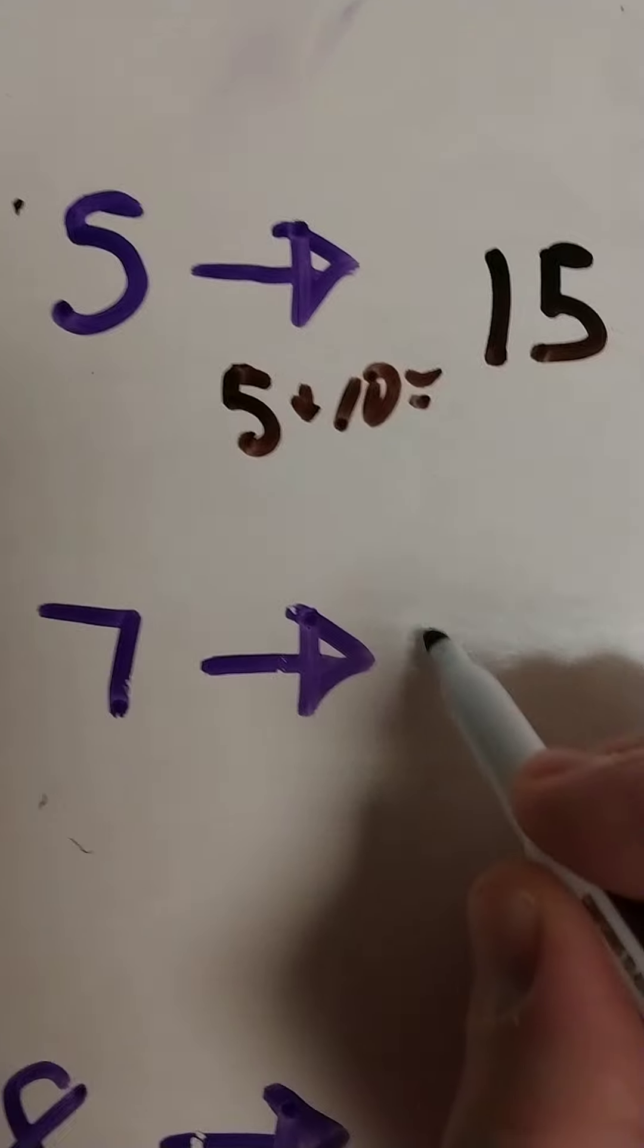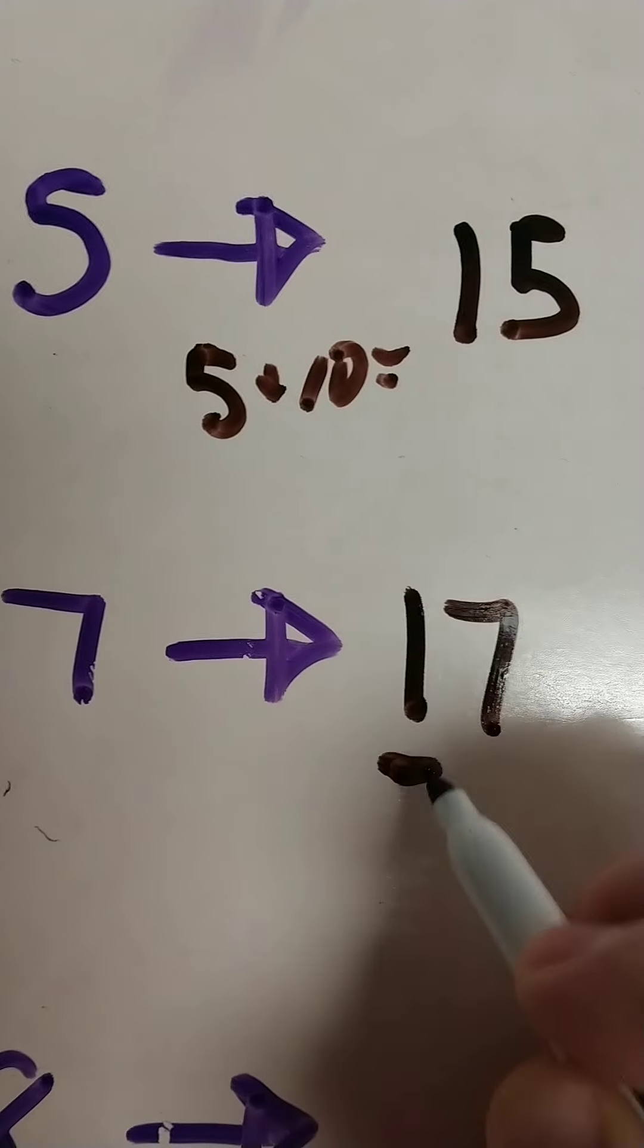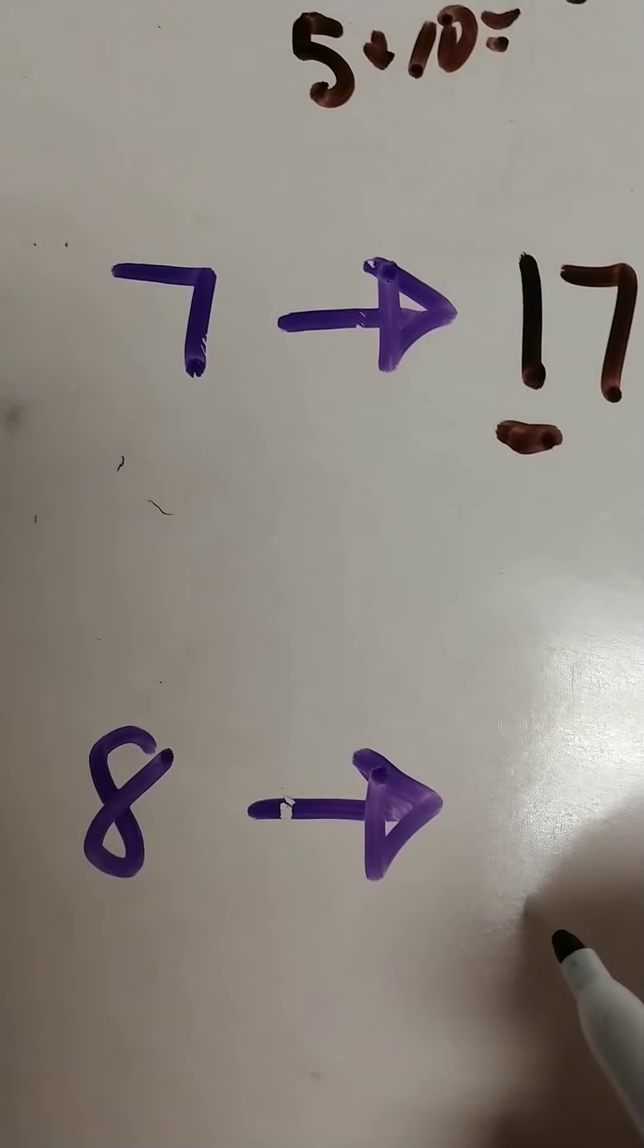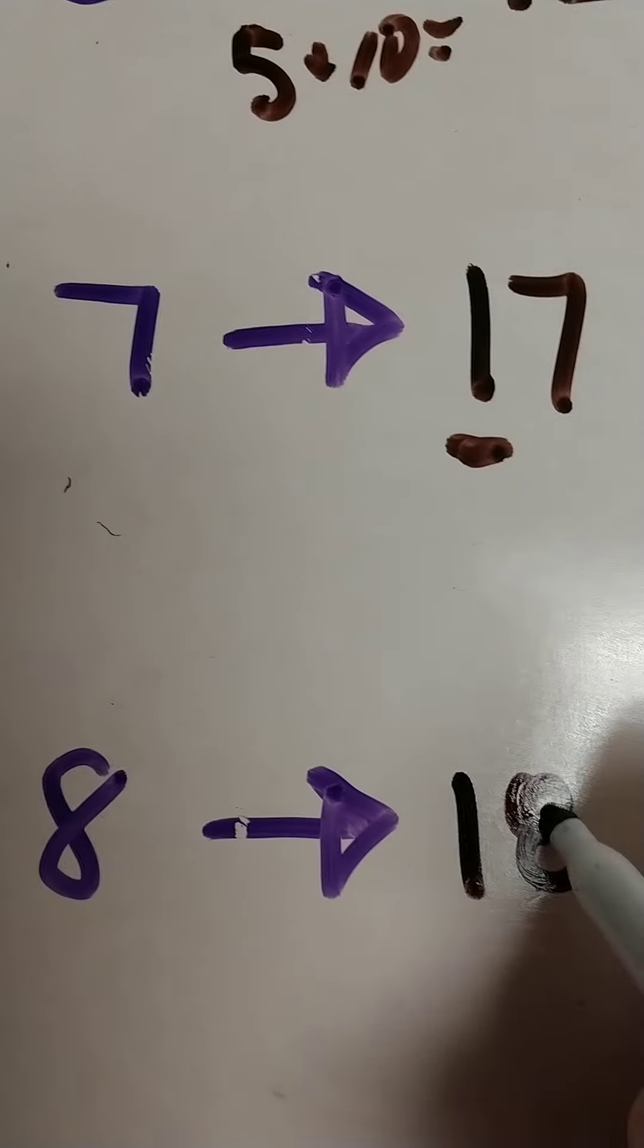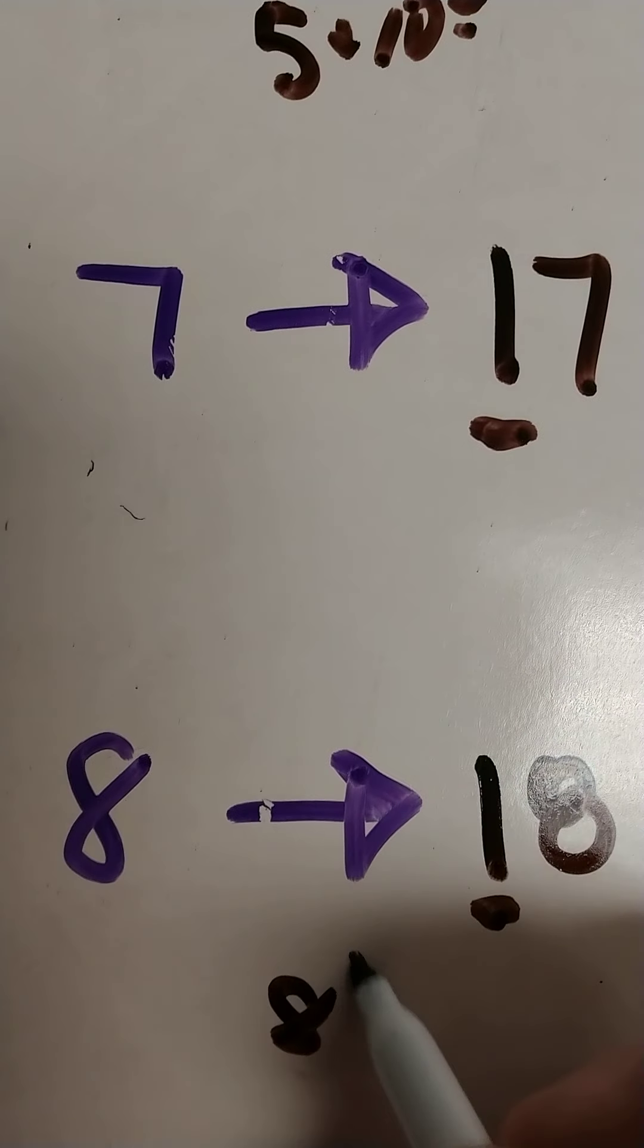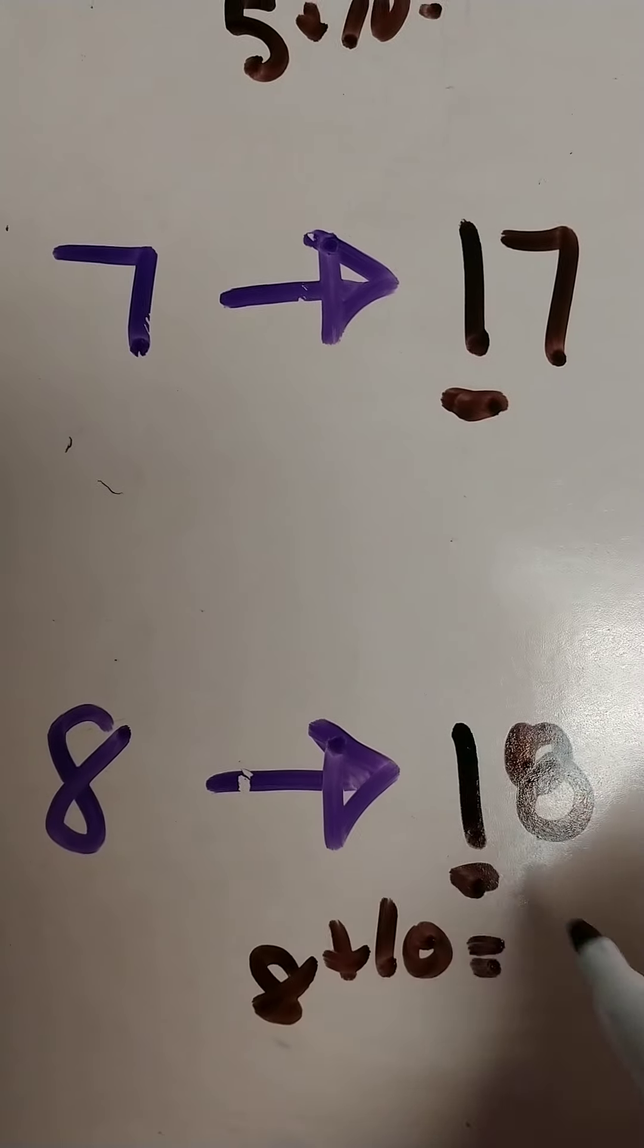10 more than 7 is 17, because we just added one 10. 8, 10 more than 8, we add one more 10 in the tens column. So that's like 8 plus 10 equals 18.